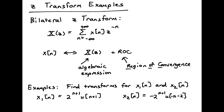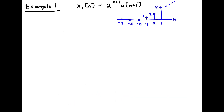The two examples we're going to do in this video are for the signals x1 of n and x2 of n. For the first example, we take the Z-transform of x1 of n, the sequence 2 to the n plus 1 times u of n plus 1. This sequence starts at n equal minus 1 due to the unit step u of n plus 1, and it's increasing — 1, then 2, then 4, and so on.